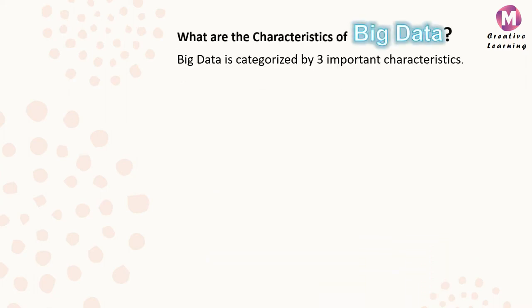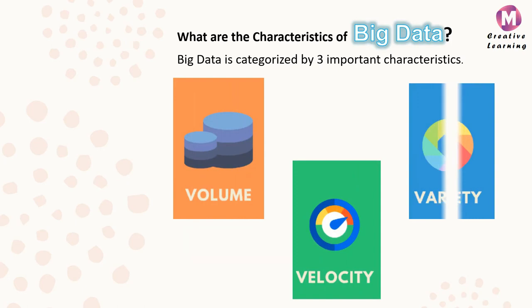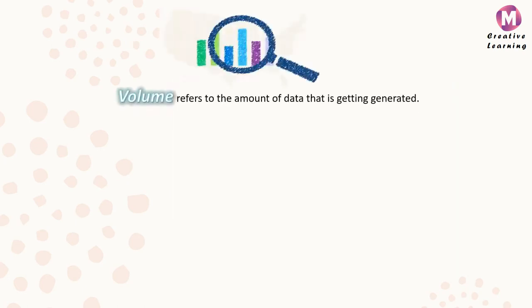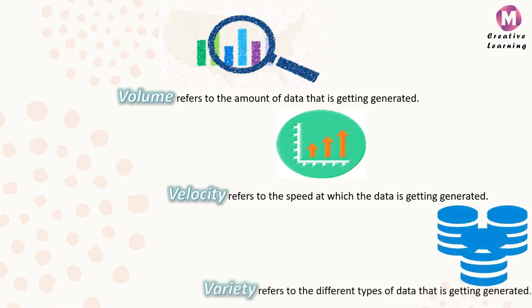Characteristics of Big Data: Big data is categorized by three important characteristics - Volume, Velocity, and Variety. Volume refers to the amount of data that is getting generated. Velocity refers to the speed at which the data is getting generated. And Variety refers to the different types of data that is getting generated.